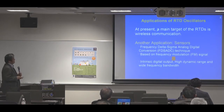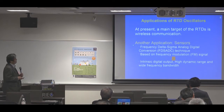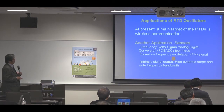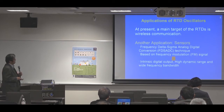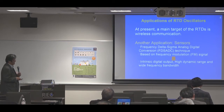At present, our main target for RTDs is wireless communication, and there are many reports in this area. However, other applications are also promising. We are working on the application of resonatomic diode oscillators to sensors using the frequency delta-sigma analog-to-digital conversion technique based on frequency modulation signal. It has various advantages such as intrinsic digital output, high dynamic range, and wide frequency bandwidth.